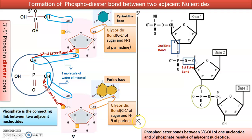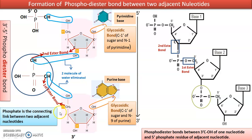The chain grows in 5' to 3' direction only. Polymerase enzyme works in 5' to 3' direction only. But we call the phosphodiester bond a 3' to 5' phosphodiester bond because the free hydroxyl group at the third carbon of the first nucleotide forms the ester bond with the phosphate group, which then makes an ester bond with the hydroxyl group at the fifth carbon of the next pentosugar. During one phosphodiester bond formation, two molecules of water are eliminated.